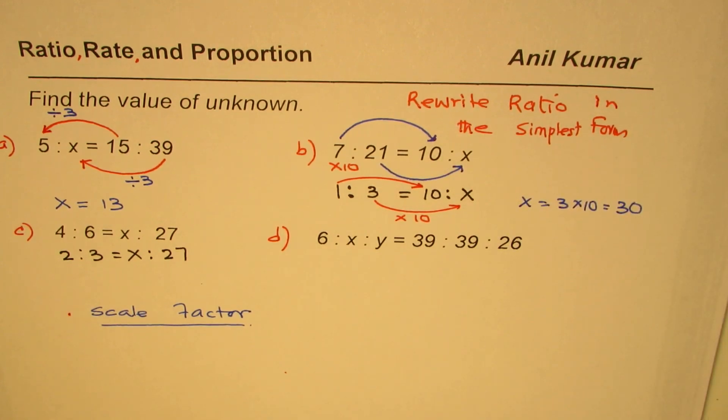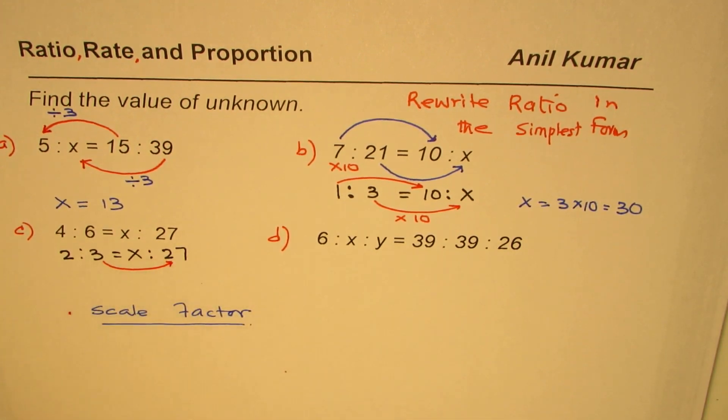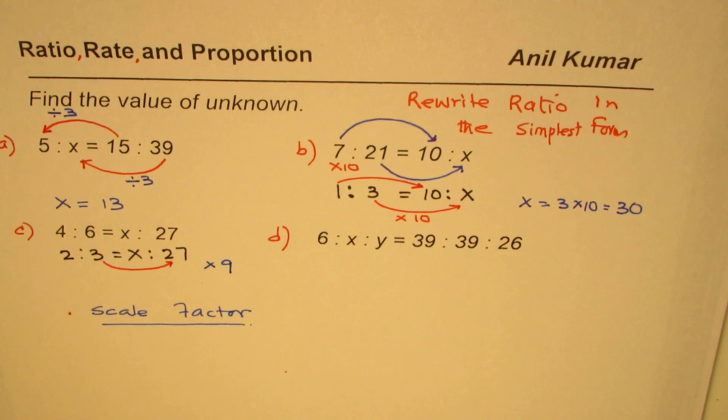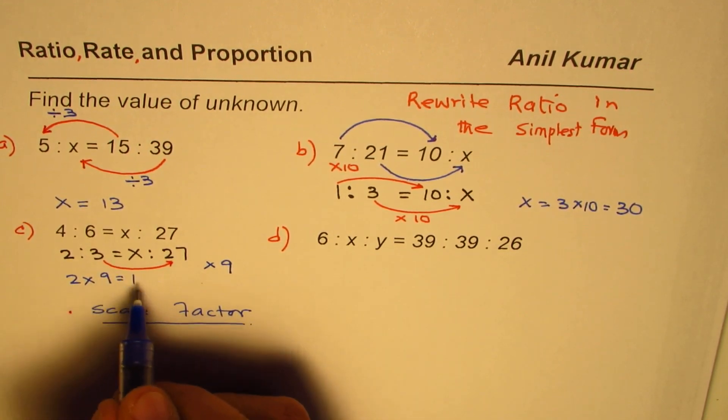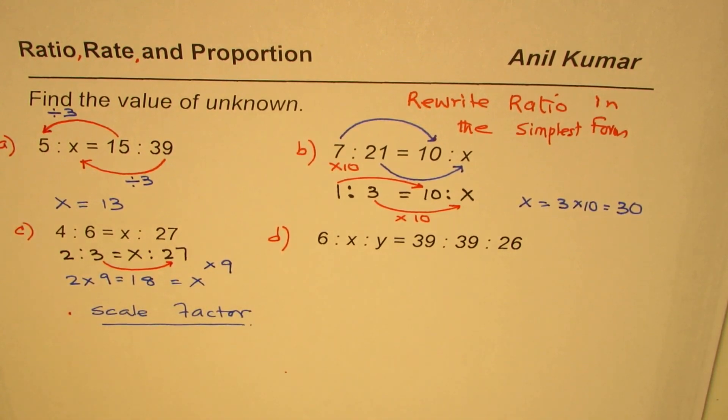So now we have to figure out how do we get 27 from 3. You get 27 from 3 if you do times 9. So 2 times 9, what is 2 times 9 equals to? It is 18. So that is the value of x.